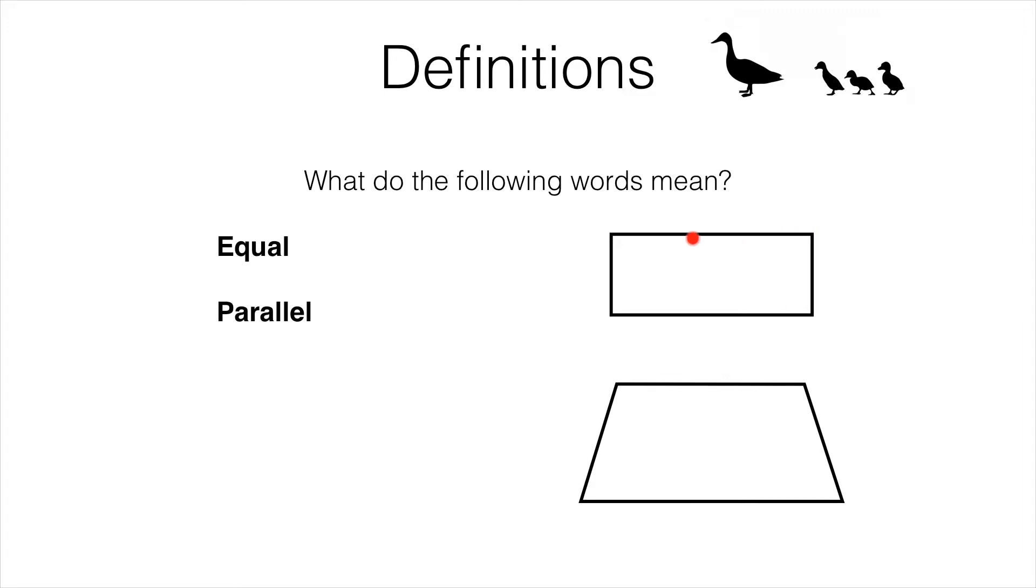In this rectangle you can see that we have two edges of equal length over on the left and the right. So we can show that by using a dash. The dash indicates that those two edges are of the same length.